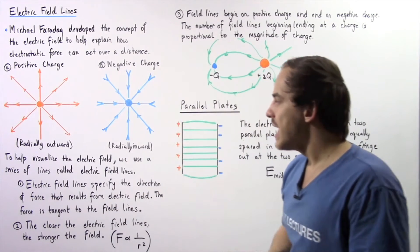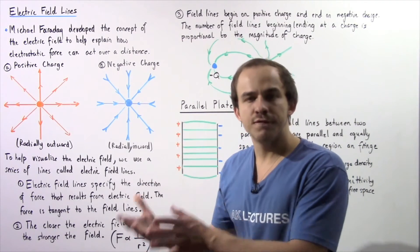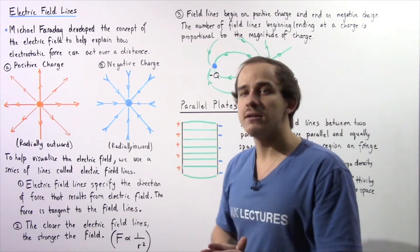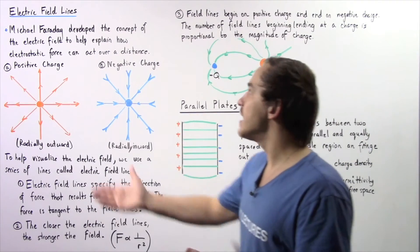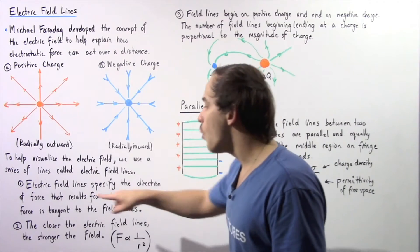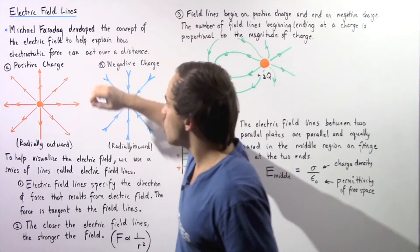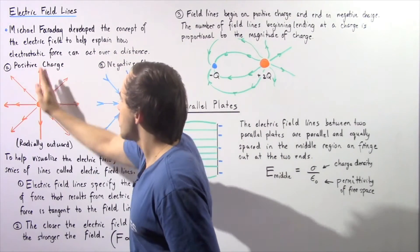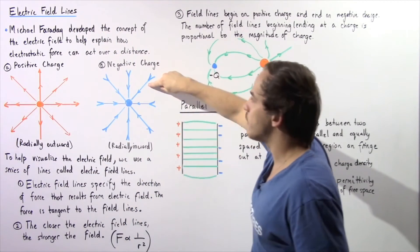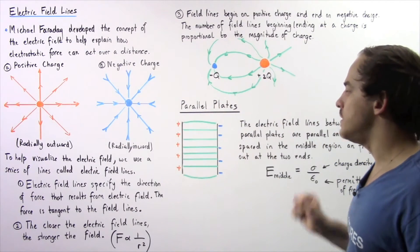Now let's move on to fact number one: electric field lines specify the direction of the electric field as well as the direction of the force that results from that electric field. That's exactly why electric field lines are sometimes called lines of force. The force is always tangent to the field lines at any particular point, so at different points along the field lines, the force points in the direction tangent to those lines.